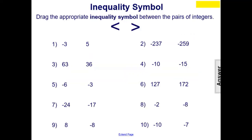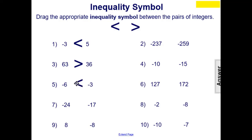Now we can drag the inequality symbol between the pairs, looking at less than or greater than. Negative 3 is less than 5. 63 is greater than 36. Negative 6 is less than negative 3 — negative 6 has a higher absolute value than negative 3. Negative 24 is less than negative 17 — it has a higher absolute value than negative 17.